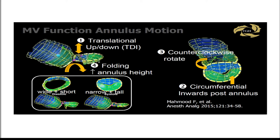The mitral valve is specifically designed to be wide and short during diastole — because it wants to be open and fill the ventricle — and tall and narrow during systole, so there is better leaflet apposition and less regurgitation.